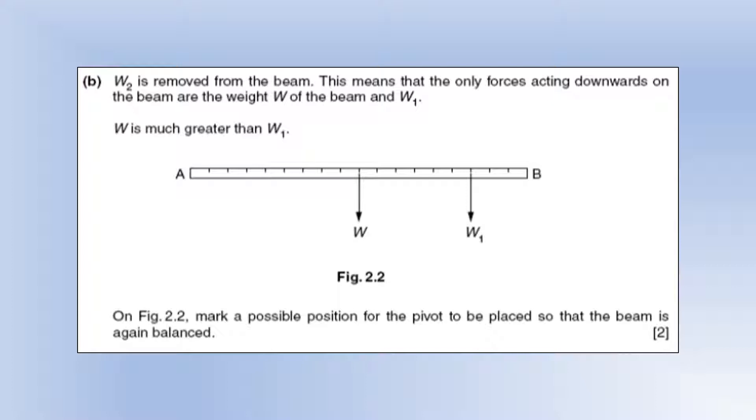We need to have them on opposite sides of the pivot so that their moments can act against each other. So it's got to be between the two forces, and it needs to be closer to W so that W's perpendicular distance is smaller to counteract the fact that W is much bigger than W1.